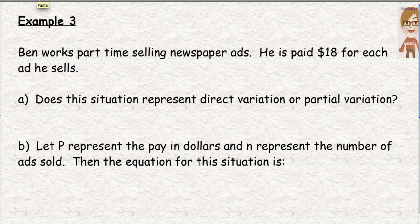Example three. Ben works part-time selling newspaper ads. He is paid $18 for each ad he sells. Is this direct or partial? All that's given is that he's 18 for each ad. 18 per ad. That is a rate. And since there is no flat fee that he's paid, we know that this is direct variation.